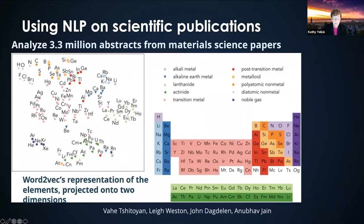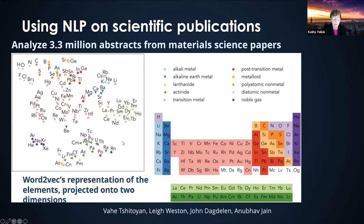Even natural language processing, which may not seem applicable to scientific disciplines, comes up in analyzing scientific publications. This is some work related to the Materials Project at UC Berkeley and Lawrence Berkeley Lab. It's really showing that you can reconstruct parts of the periodic table by doing natural language processing on scientific publications — they analyzed over 3 million abstracts from papers to do this work.